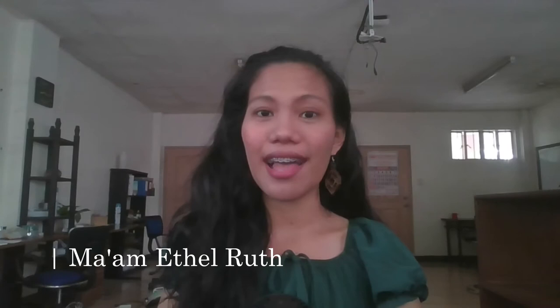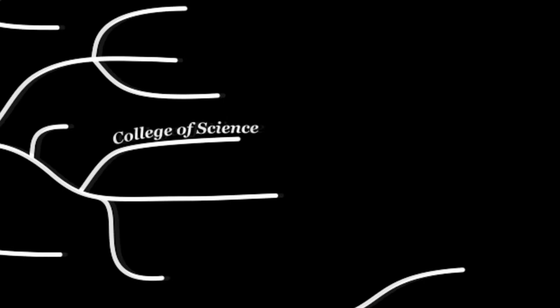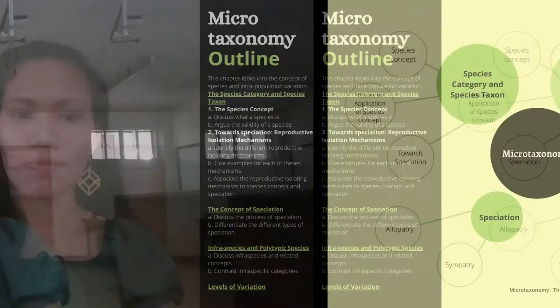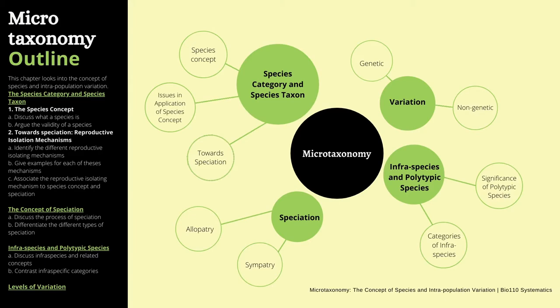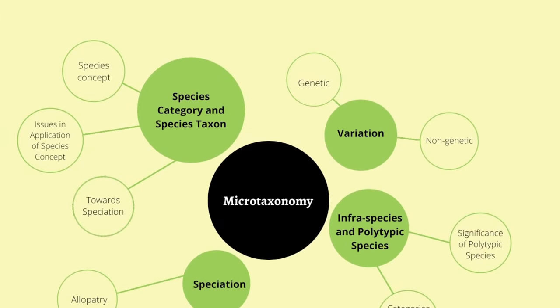Hello class and welcome to the third lecture in our systematics class: Microtaxonomy. This is your teacher, Ma'am Ethelruth. For this chapter, we are looking into the species category and species taxon. Under this topic, we will look at the species concept, the issues in application of the species concept, and the mechanisms towards speciation. You are expected to be able to discuss what a species is and argue the validity of a species.